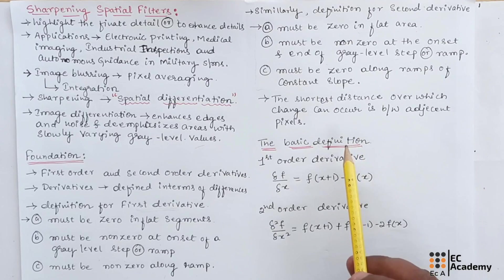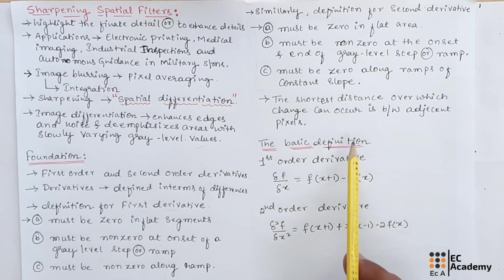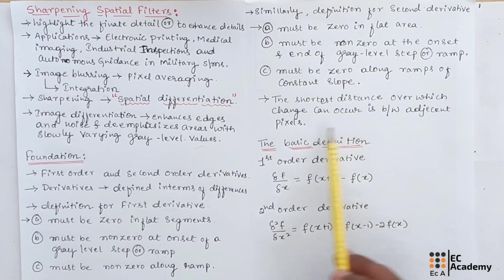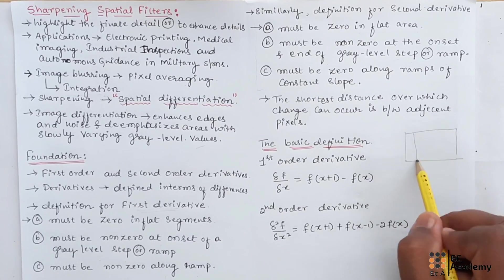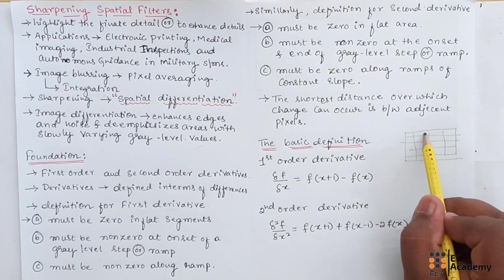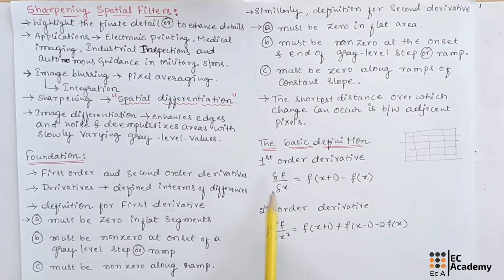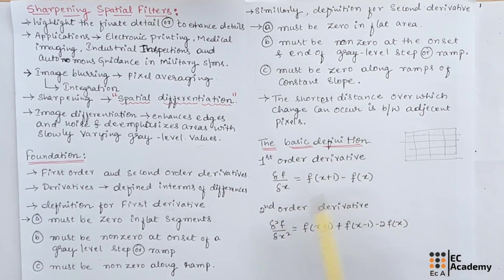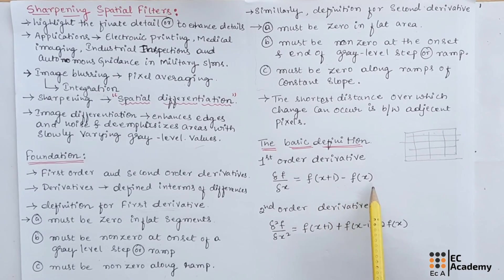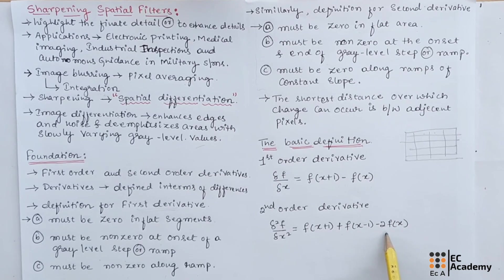Since we are dealing with digital quantities whose values are finite, the maximum possible gray level change is also finite, and the shortest distance over which the change can occur is between adjacent pixels. The first-order derivative of a one-dimensional function f(x) is defined as: δf/δx = f(x+1) − f(x). The second-order derivative is: δ²f/δx² = f(x+1) + f(x−1) − 2f(x).